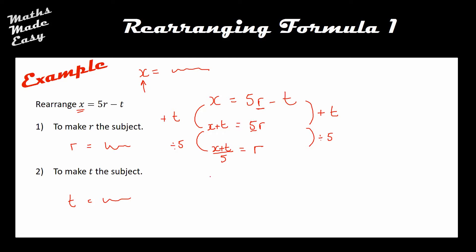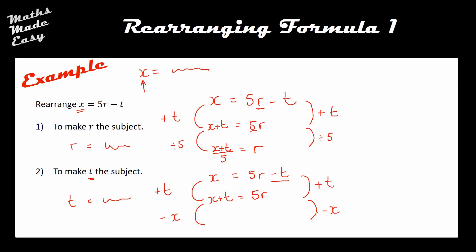The second one is slightly trickier. Again starting with X equals 5R minus T. You've always got to be aware when whatever they've asked you to make the subject is a negative term — and that happens here, my T is negative. Rather than try and get everything away from T, I'm going to add T to both sides. This gives X plus T equals 5R. T has moved sides and become positive. Now I subtract X from both sides, leaving T on its own. T equals 5R minus X, and T is now the subject.